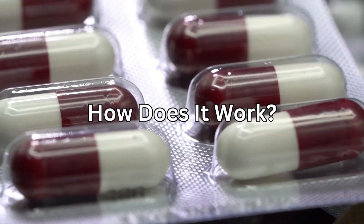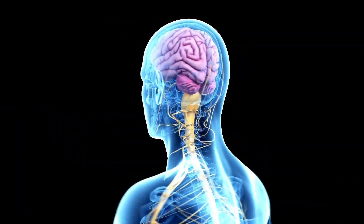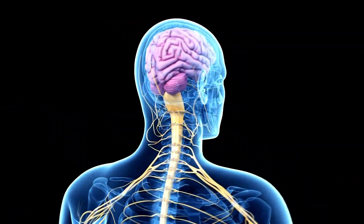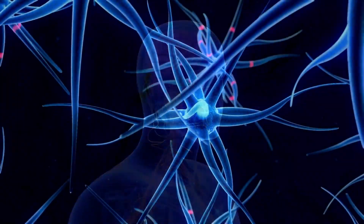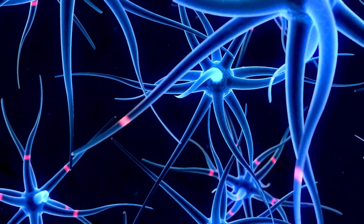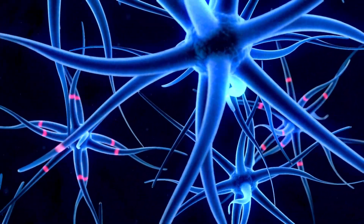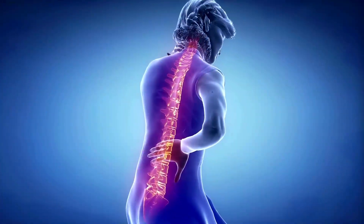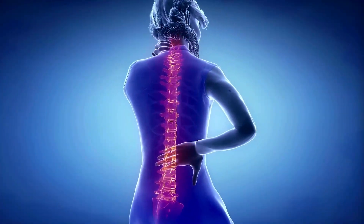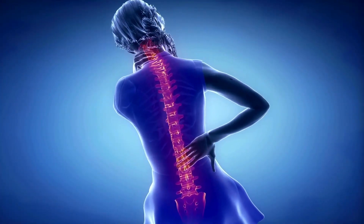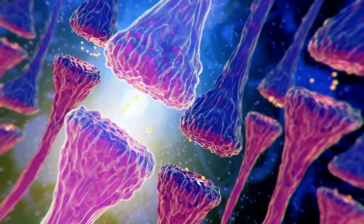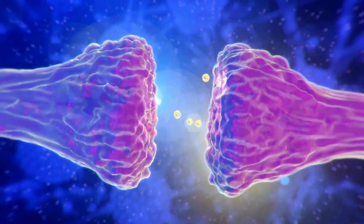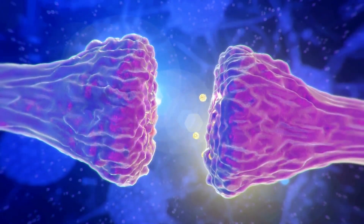So how does it work? In epilepsy, it's thought that gabapentin stops seizures by reducing the abnormal electrical activity in the brain. With nerve pain, it's thought to block pain by affecting the pain messages traveling through the brain and down the spine.